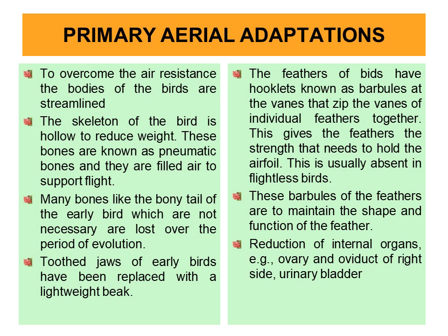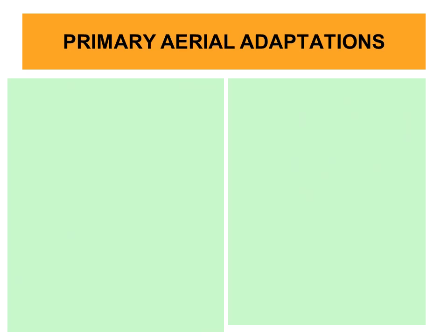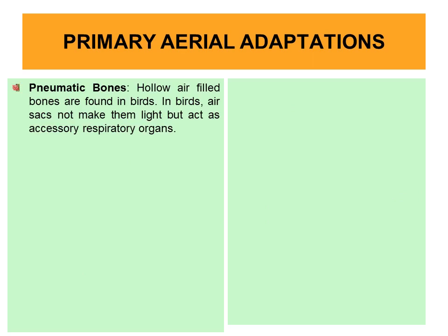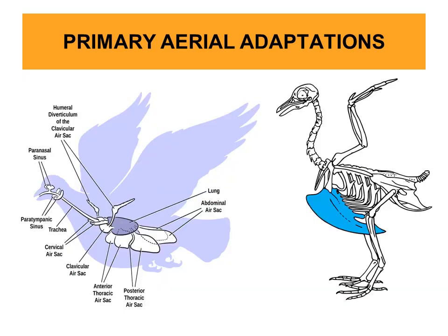There is a reduction of internal organs to reduce weight — the ovary and oviduct of the right side are absent, and the urinary bladder is also absent in birds. Presence of air sacs makes the body light. The uncinate processes are helpful for birds to fly and are responsible for forming a basket where the organs are placed properly during flight.